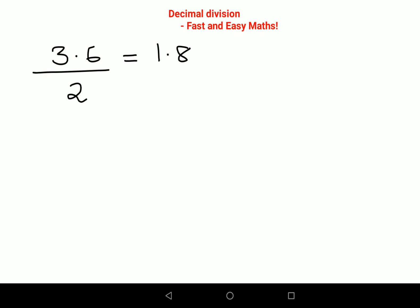Problem arises when you have something like this: 0.36 upon 0.2. This is where a lot of my students get stuck. They get confused about where the final answer will have a decimal point. Here I'm going to show you a very easy method and trust me this method will work in every single situation.